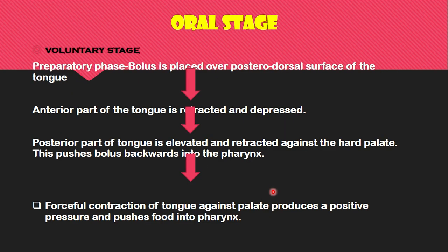The oral stage is a voluntary stage. In this stage, the bolus passes from the mouth into the pharynx by means of a series of actions. The bolus is placed over the posterior dorsal surface of the tongue. The anterior part of the tongue is then retracted and depressed so that food doesn't go back, while the posterior part of the tongue is elevated and retracted against the hard palate, pushing the bolus downward.